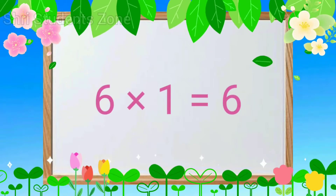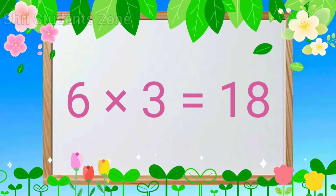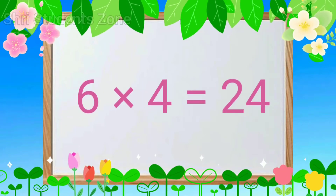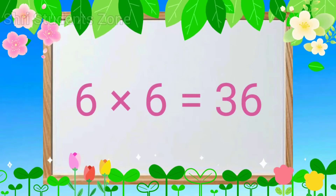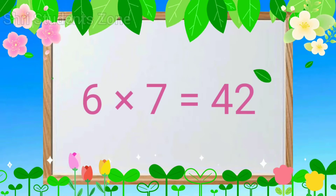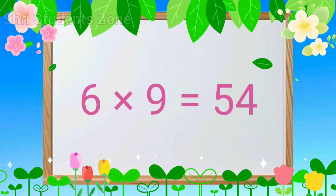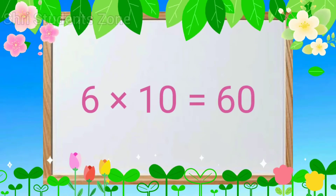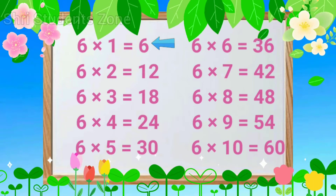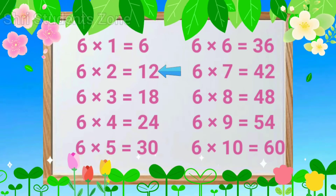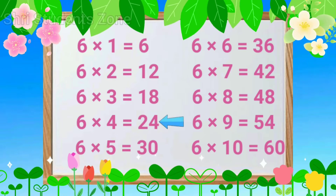Table of 6. 6 1s are 6, 6 2s are 12, 6 3s are 18, 6 4s are 24, 6 5s are 30, 6 6s are 36, 6 7s are 42, 6 8s are 48, 6 9s are 54, 6 10s are 60. Let's read again.